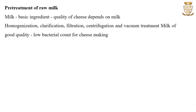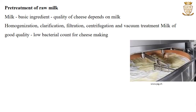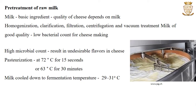The milk for cheese production must be free from antibiotics and any other sanitizing agent that might interfere with microbial fermentation. The milk may contain some suspended materials like leukocytes or particulate matter, so techniques like homogenization, clarification, filtration, centrifugation and vacuum treatment are done for the removal of suspended particles in the milk.